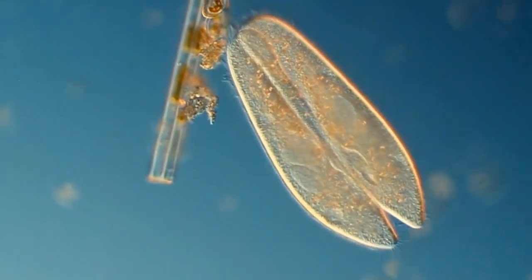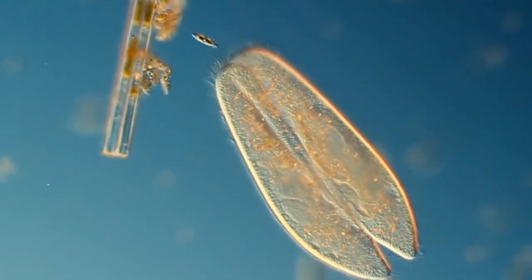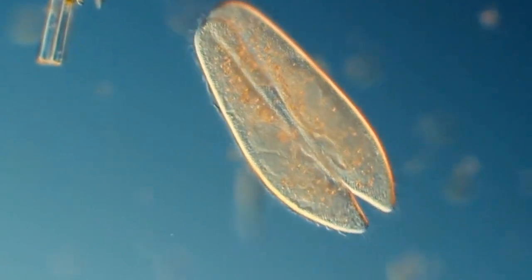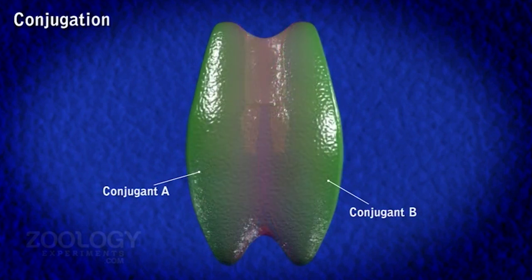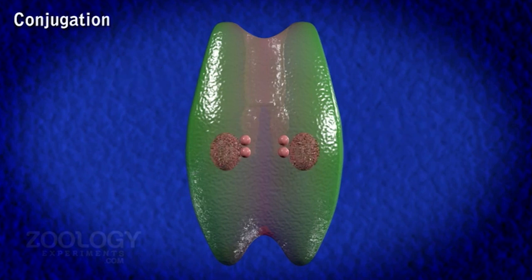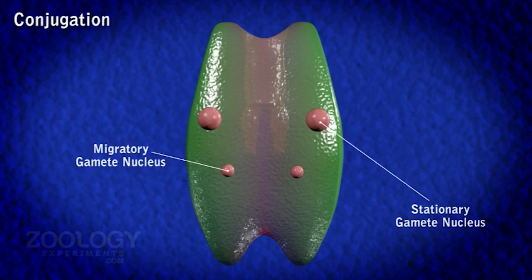The process of sexual reproduction is much more complicated than asexual reproduction. During conjugation, two cells of compatible mating types meet and align side by side. They become partially fused and form a protoplasmic bridge in between. At this stage, their micronuclei are diploid. Each cell undergoes meiosis to produce four haploid micronuclei. Out of these four micronuclei, three degenerate and disappear. The remaining one micronucleus divides by mitosis to form two unequal pronuclei or gamete nuclei. The smaller gamete nucleus is active and migratory in nature and is called the migratory gamete nucleus. The larger gamete nucleus is passive and stationary in nature and is called the stationary gamete nucleus.